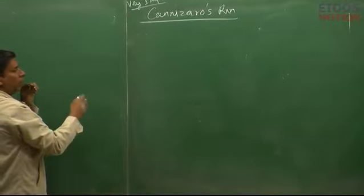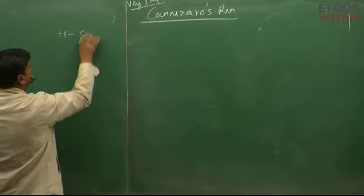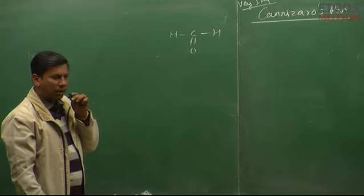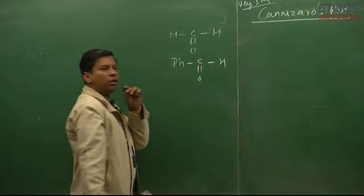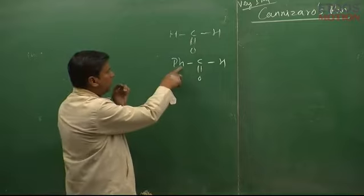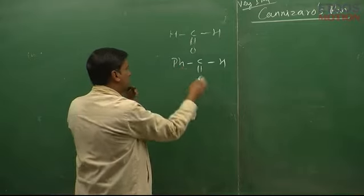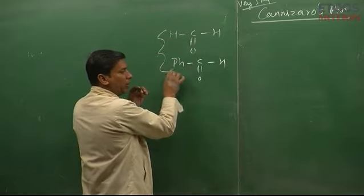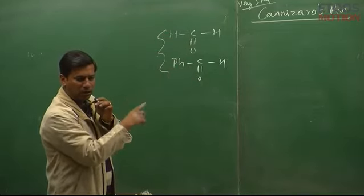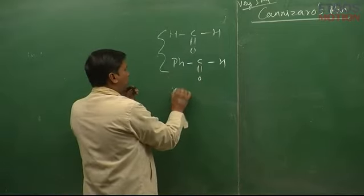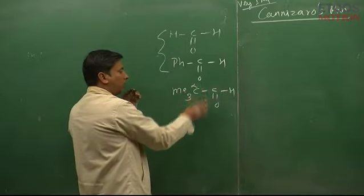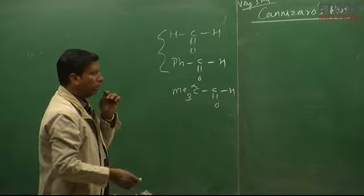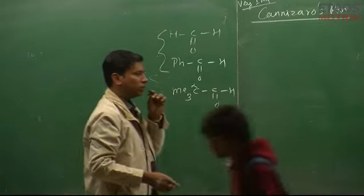Kis tarah ke aldehydes Cannizzaro reaction show karenge: HCHO — aldehyde hai lekin iske paas koi alpha carbon hi nahi hai, isliye alpha-H bhi nahi hai. Similarly PhCHO — alpha carbon bhi present hai benzene ke paas lekin wahaan pe koi hydrogen nahi hai. Ye dono sabse common hain — jab bhi Cannizzaro aaye, inhi mein se ek ko guess karna hai. ME₃C-CHO — alpha carbon hai lekin uspe H present nahi hai.